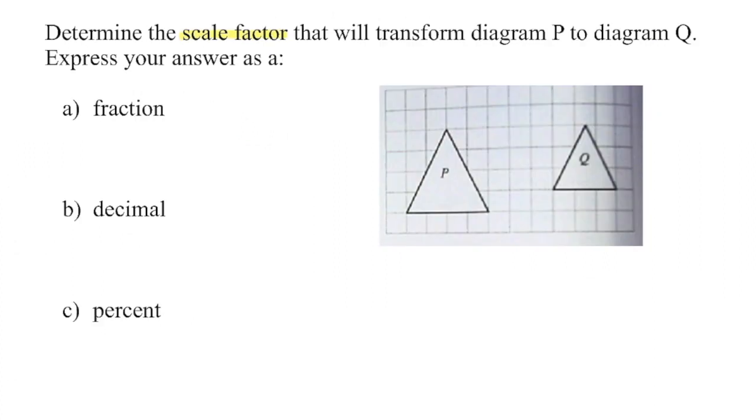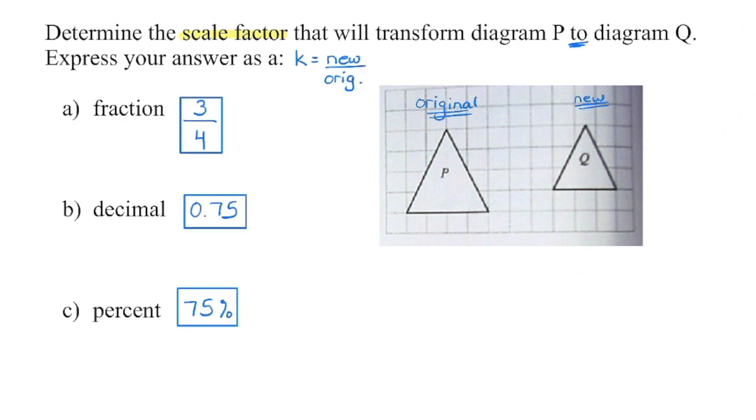And in our final question, we're asked to determine the scale factor that will transform P to Q. So that indicates we're starting with P. We're going to Q. We're going to choose corresponding measurements. So I would probably use the base. We can see that the base is four units on the original. The base is three units on the new. Or we could also take the height. So I know from here to here, we're going to have a height of four units. We're going to have a height of three units. Choose corresponding measures and then see if you can get the scale factor. First, do it as a fraction, and then you can convert it into the other forms. And then always check to see if this is reasonable. This is less than one, which means we should have a reduction. So from here to here, we are getting smaller. That's good. Three divided by four gives us 0.75. Multiply that by 100, and we get the percentage.